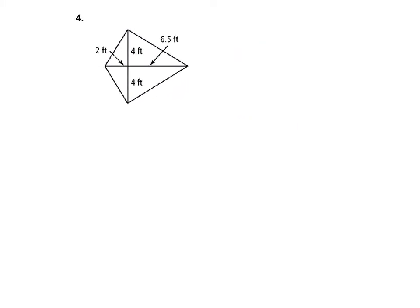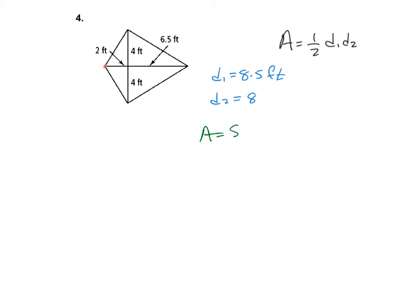The next one is a kite. The area of a kite is one-half of the product of the diagonals. The first diagonal is 2 plus 6.5, so diagonal 1 equals 8.5 feet. Diagonal 2 equals 8 feet. So the area equals 8.5 times 8 divided by 2, which is 8.5 times 4, giving an area of 34 square feet.